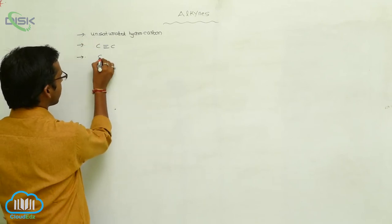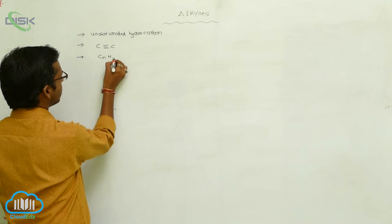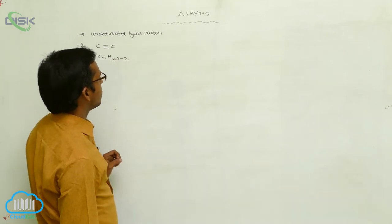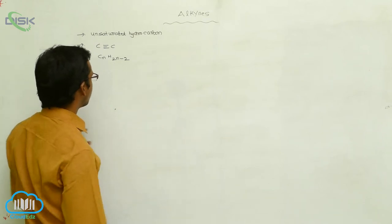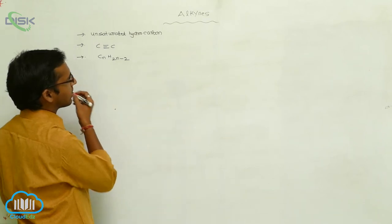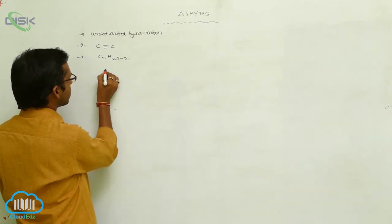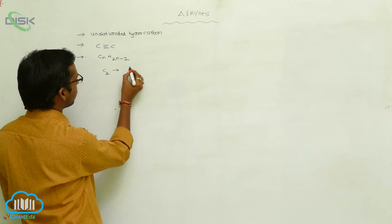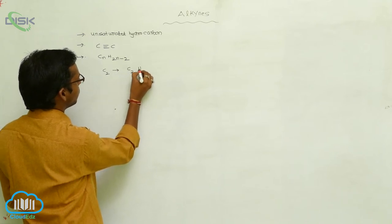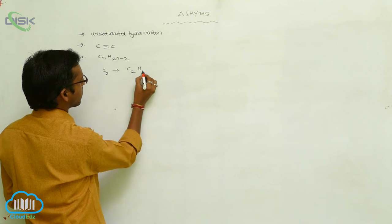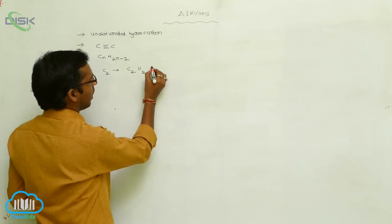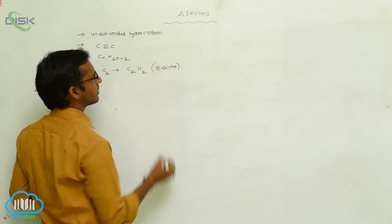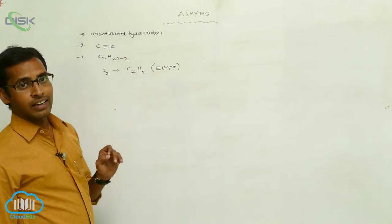Alkynes follow the general formula CnH2n minus 2. So the first alkyne: if n equals 2, you apply C2, then 2 into 2 is 4, minus 2 gives C2H2. This is called ethyne, also known as acetylene. The first member of alkyne is ethyne or acetylene.